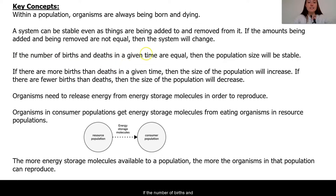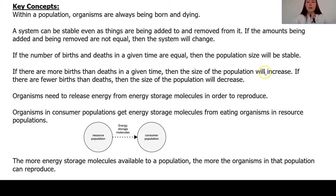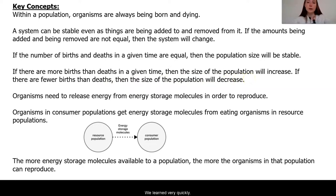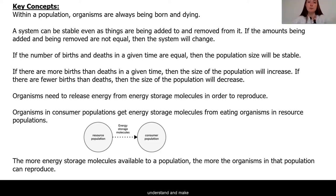If the number of births and deaths in a given time are equal, then the population size will be stable. If there are more births than deaths in a given time, then the size of the population will increase. If there are fewer births than deaths, then the size of the population will decrease. We learned very quickly that the key to population growth or stability is in the ratio of births and deaths. We must look at both sides to understand and make predictions about what is happening in a population.